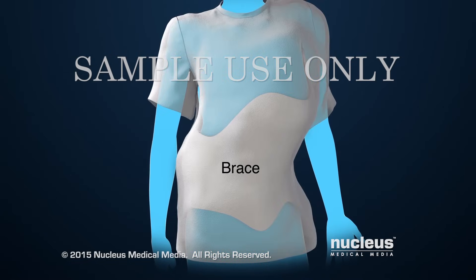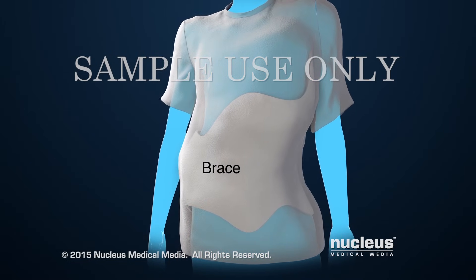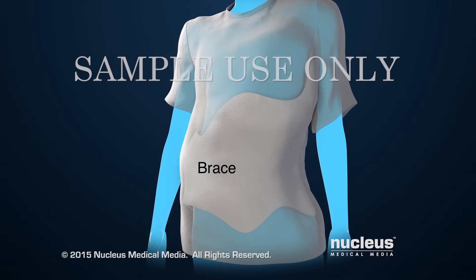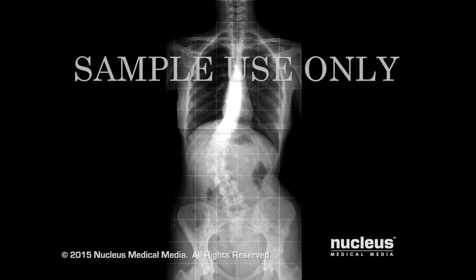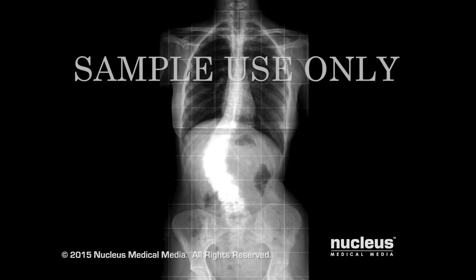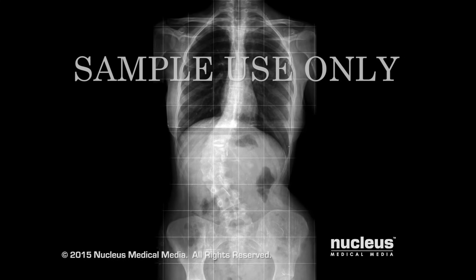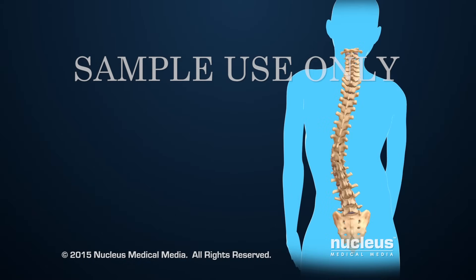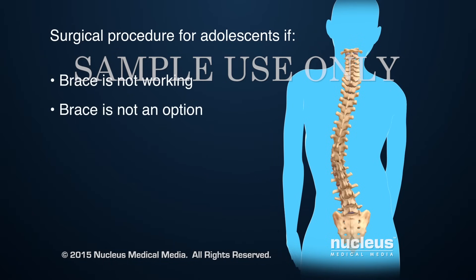Scoliosis is often treated with a brace to stop the curve from getting worse. Doctors will measure the spinal curve over time to see if the brace is working. For an adolescent, a surgical procedure may be necessary if the brace isn't working or if a brace is not an option.